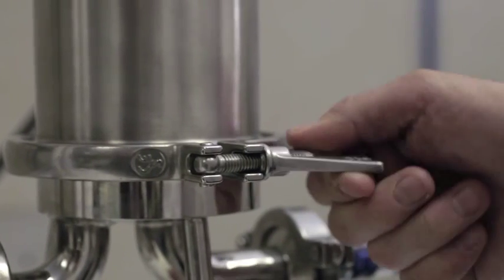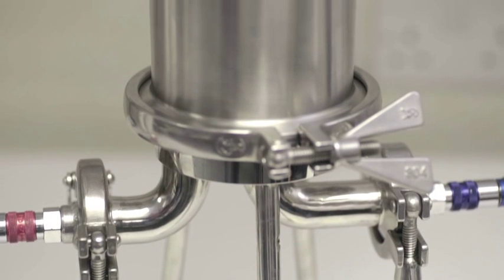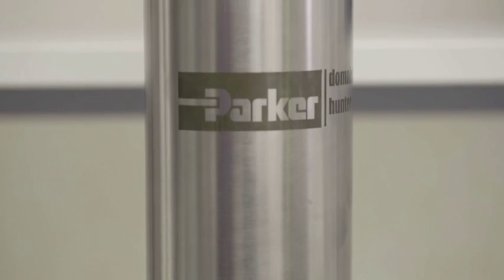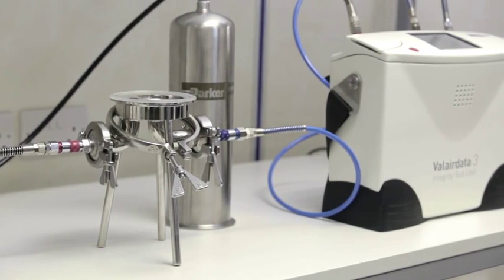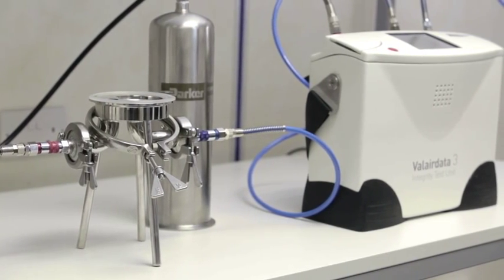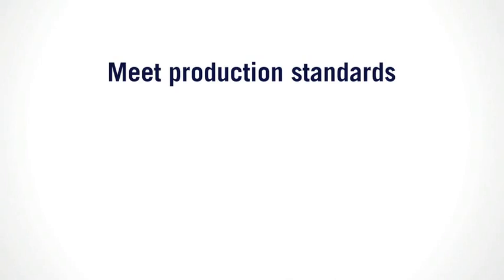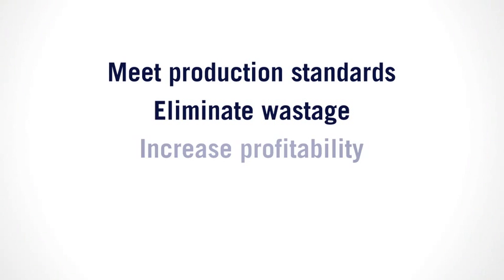Created with dairy, brewing and soft drink manufacturers in mind, the ValairData 3 is designed to help protect food manufacturing processes from non-conformances arising from gas contamination. This in turn allows food business operators to meet ever-increasing production standards, eliminate wastage and increase profitability.